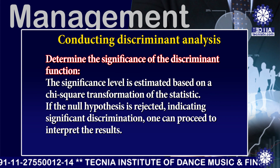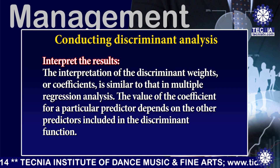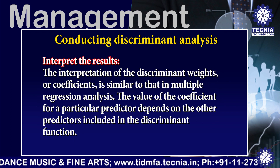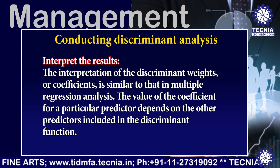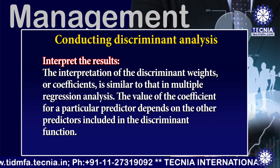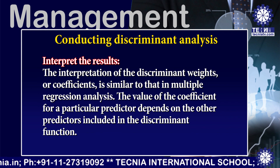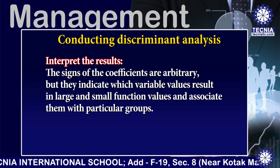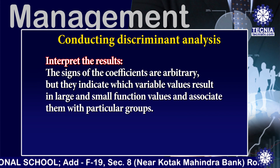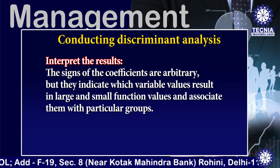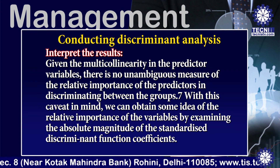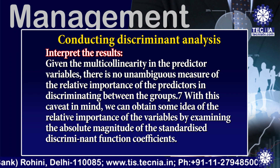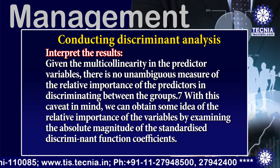Step 4 is to interpret the results. The interpretation of the discriminant weights or coefficients is similar to that in multiple regression analysis. The value of the coefficients for a particular predictor depends on the other predictors included in the discriminant function. The signs of the coefficients are arbitrary, but they indicate which variable values result in large and small function values and associate them with particular groups. Given the multicollinearity in the predictor variables, there is no unambiguous measure of the relative importance of the predictors in discriminating between groups.